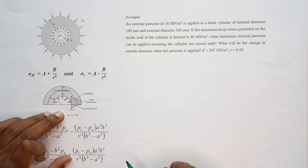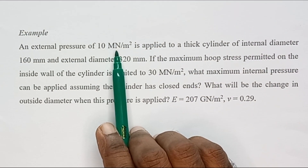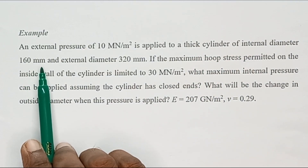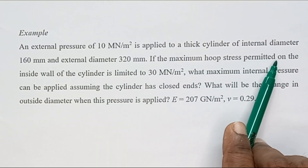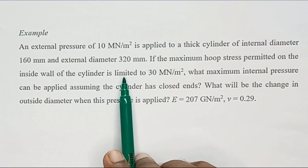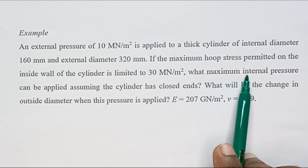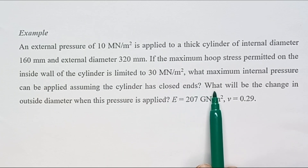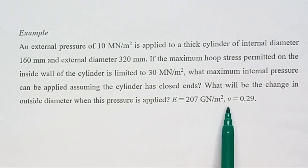In this video I am going to explain a solid thick core cylinder problem. An external pressure of 10 megapascal is applied to a thick cylinder of internal diameter 160 mm and external diameter 320 mm. The maximum hoop stress on the inside wall is limited to 30 megapascal. Question one: what maximum internal pressure can be applied assuming the cylinder has closed ends? Question two: what will be the change in outside diameter when this pressure is applied? The elastic modulus and Poisson's ratio are given.